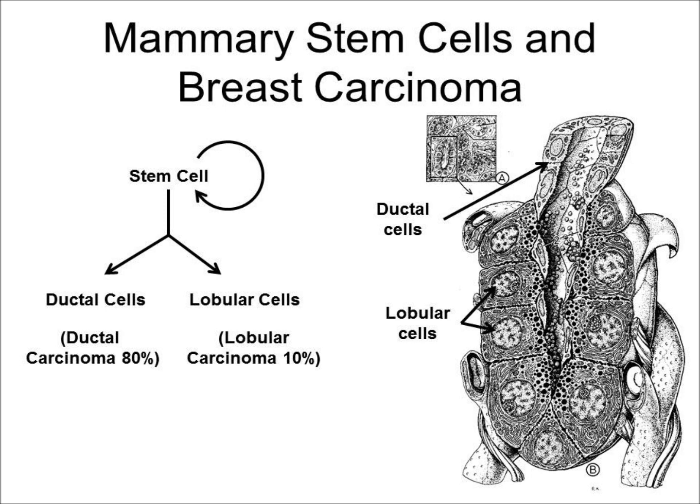At present, the stem cell theory concerning the origins of breast cancer is widely accepted. This theory postulates that abnormalities in the development of stem cells gives rise to cancer. Stem cells have the capacity of self-renewal — when a stem cell divides, one of the daughter cells gives rise to a copy of itself, while the other daughter cell can undergo terminal differentiation. In the case of the breast, these stem cells are believed to be located near the junction of the terminal duct and the glands. The final result of this differentiation can be either a ductal cell or a lobular cell. Approximately 80% of breast cancers arise from the ductal lineage, whereas about 10% are from the lobular lineage.